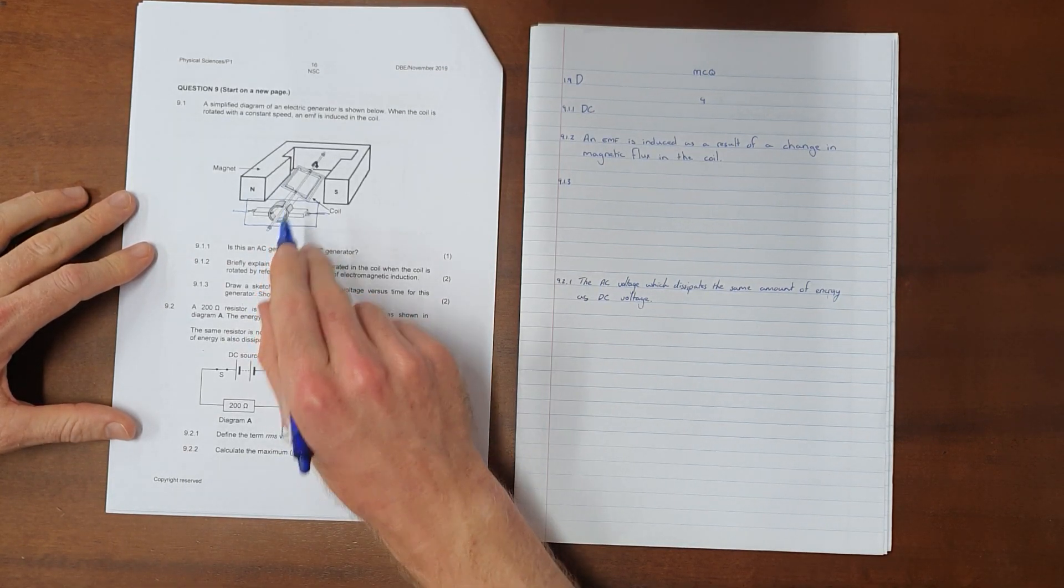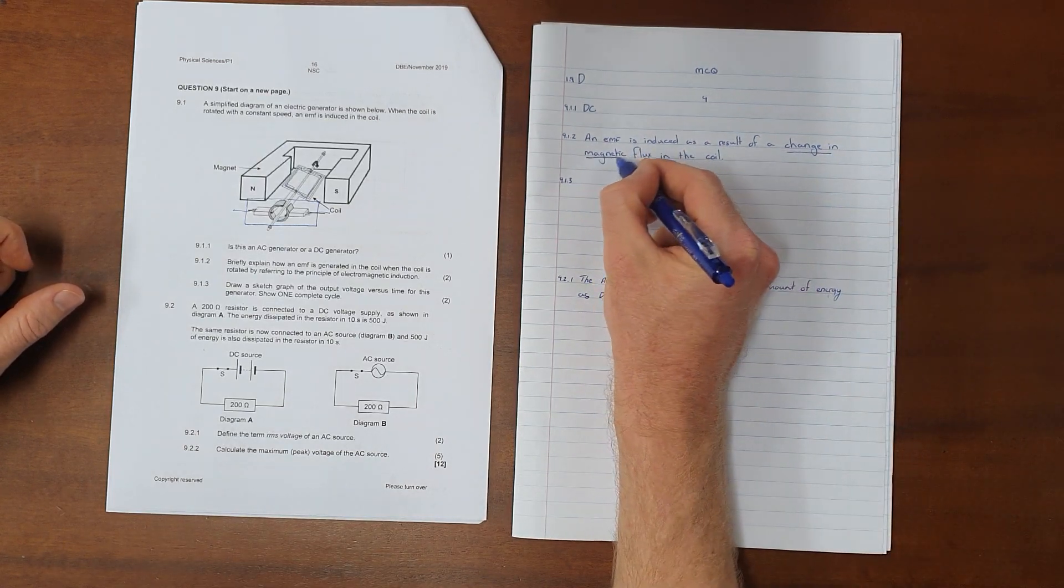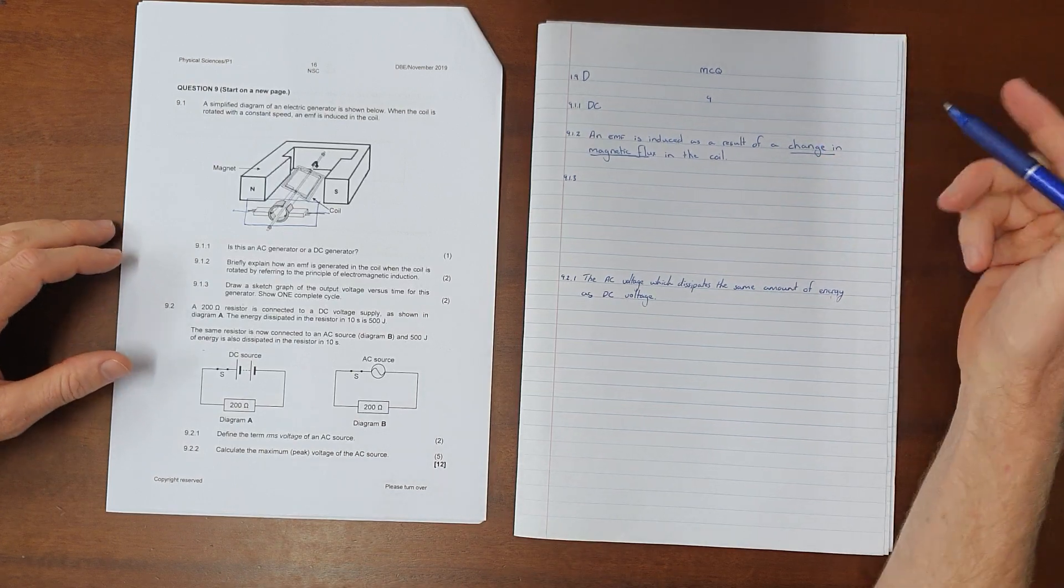Question 9.1.2: Briefly explain how an EMF is generated in the coil when it's rotated, referring to the principle of electromagnetic induction. All we need to say is that an EMF is induced as a result of a change in magnetic flux in the coil. That's the principle of electromagnetic induction - a change in magnetic flux induces an EMF.